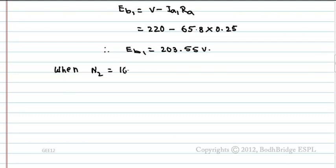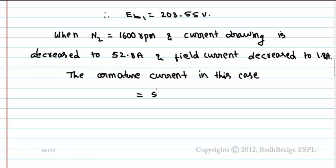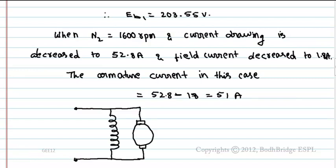Then speed is increased to 1600RPM and current drawing is decreased to 52.8A and field current decreased to 1.8A. The armature current in this case equals to 52.8A minus 1.8A.